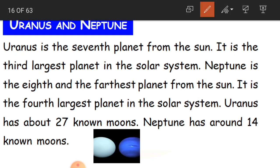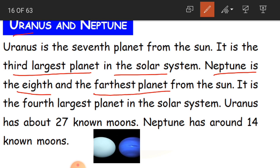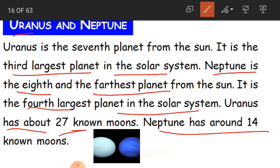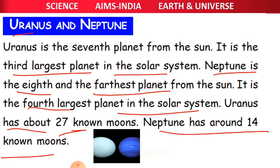Uranus is the seventh planet and the third largest planet in the solar system, with about 27 known moons. Neptune is the eighth and farthest planet from the sun and the fourth largest planet in the solar system, with around 14 known moons.